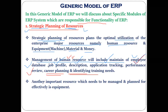Apart from managing human resources, there are other important resources that need to be managed and planned: equipment (machines), materials, and money. These resources are also managed using the strategic planning of resources module. The next slide covers what kind of planning is done related to equipment.